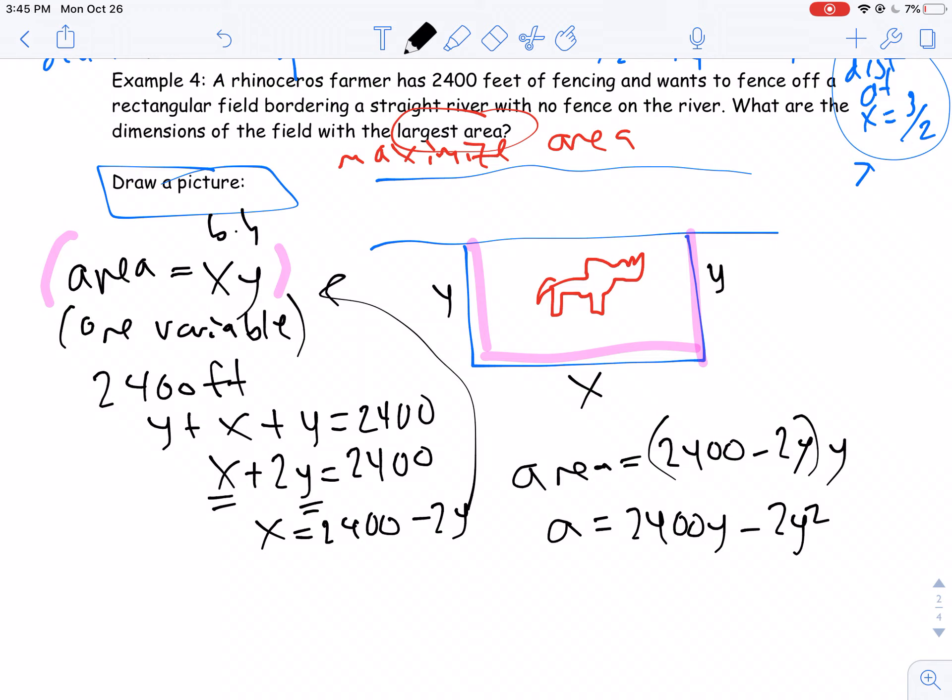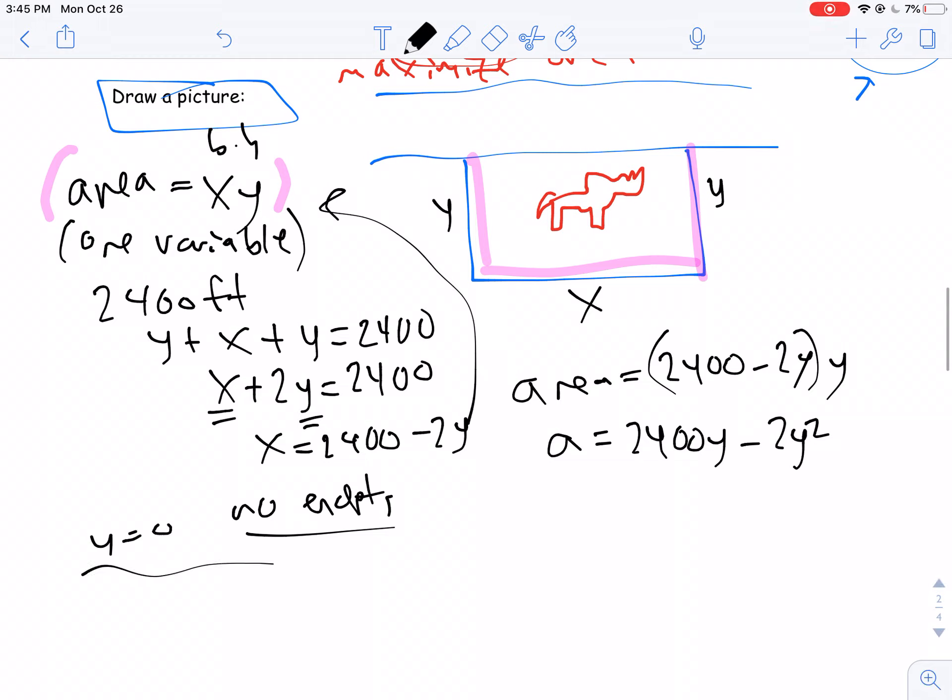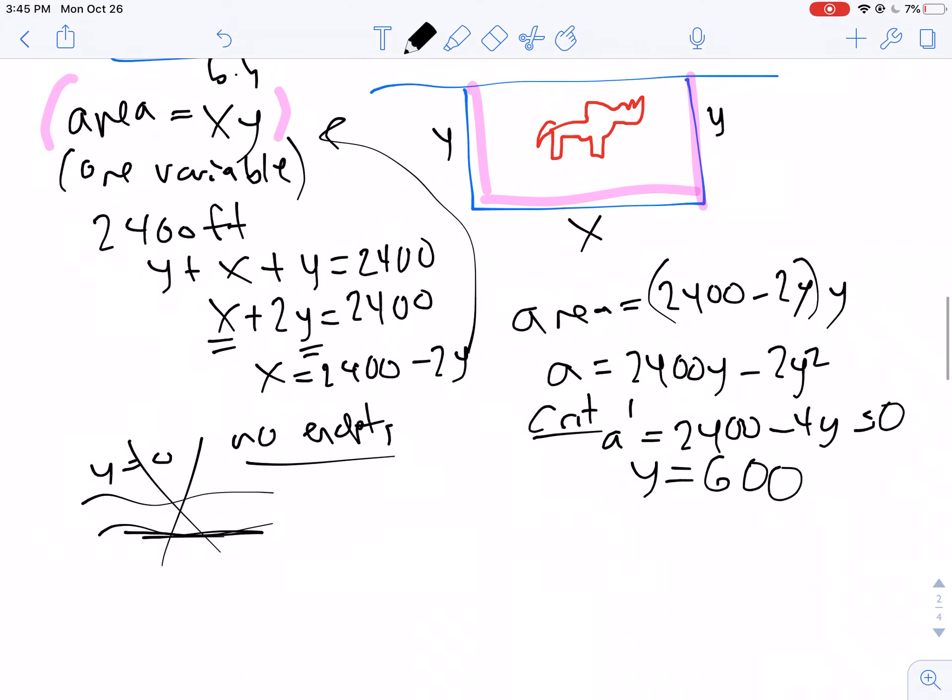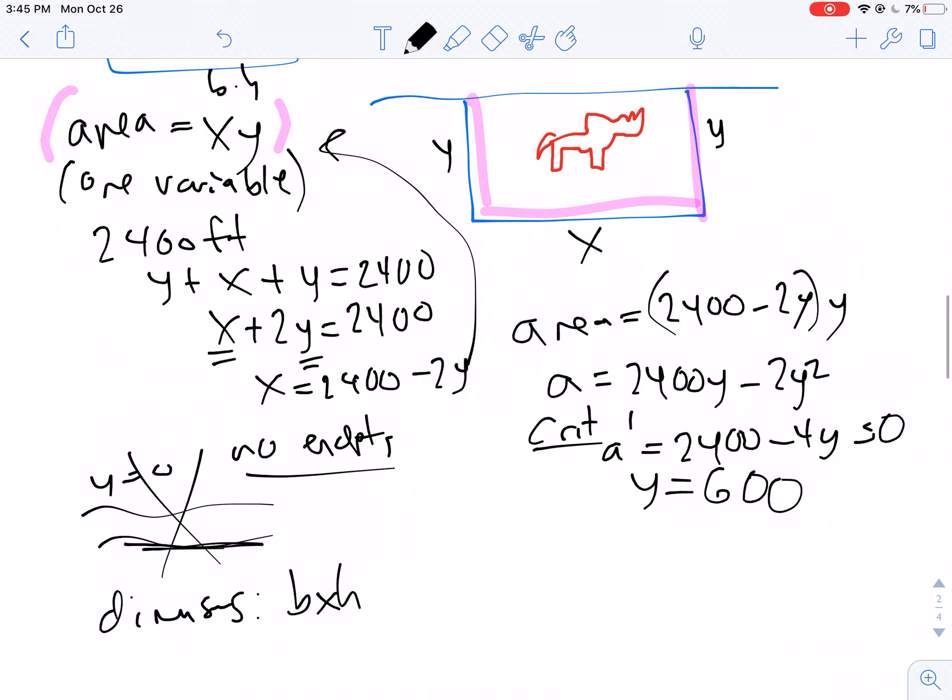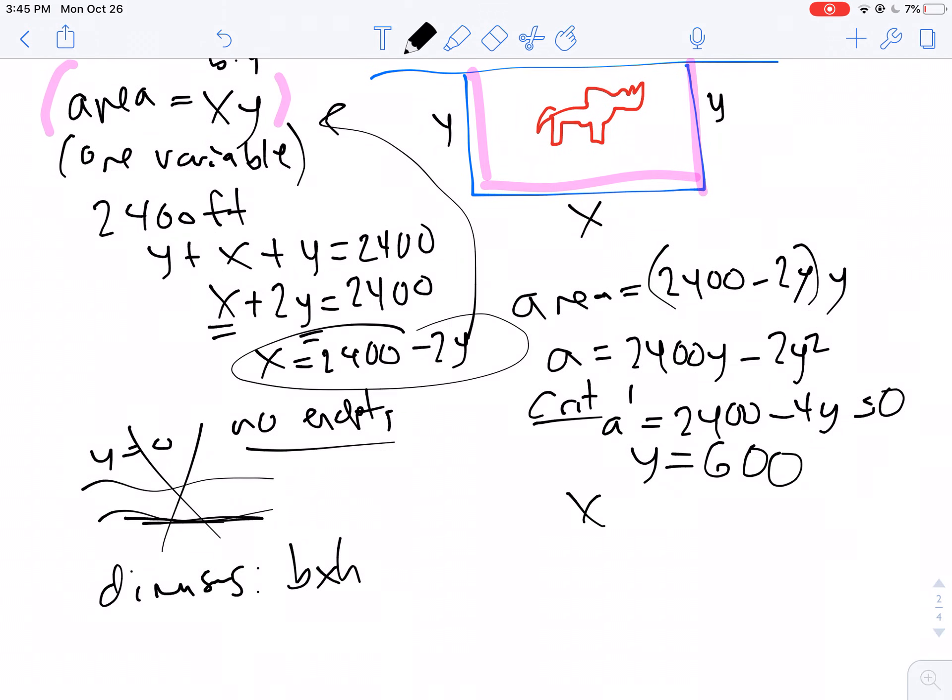All right, now it asks for the dimensions of the field with the largest area, so I need to take the derivative here. There are no endpoints per se. But we do need to find the critical points. So the critical point is when the area prime is 0. So we have 2,400 minus 4y equals 0. So that happens when y equals 600. Okay, let's answer the question. The question asks for the dimensions of the field. So the dimensions are, what is the base times height? So if I know that my height is 600, I know my x, using this equation here, is 2,400 minus 2 times 600. So that's 1,200. So my dimensions are going to be 1,200 by 600.